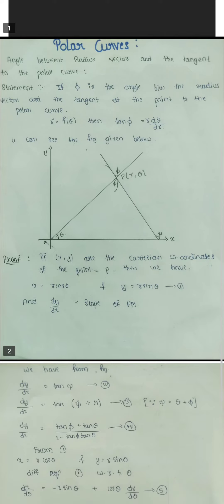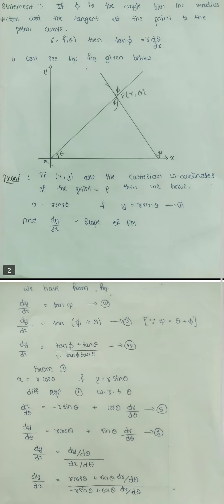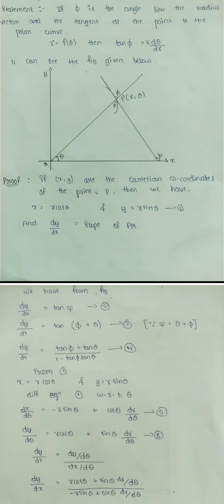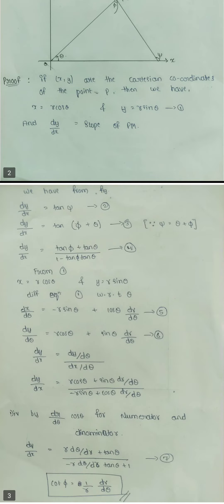You can see the figure given below. Proof: If x and y are the Cartesian coordinates of the point P, then we have x equals r cos theta and y equals r sin theta. Take this as equation 1. dy by dx equals the slope of the tangent, so dy by dx equals tan ψ. Take it as equation 2.